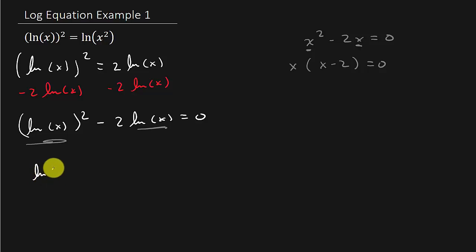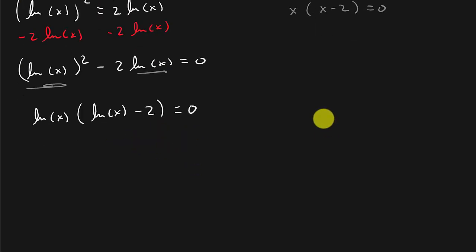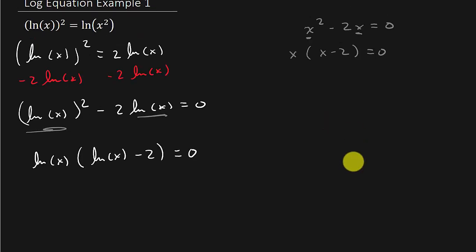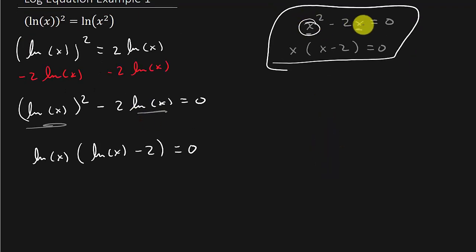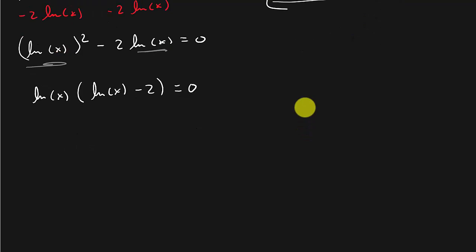So I'm going to factor out a natural log x, and that's going to leave me with natural log x minus 2 equals 0. Alright, it's the same concept as this over here. It's just that the natural log of x is acting like the x values.